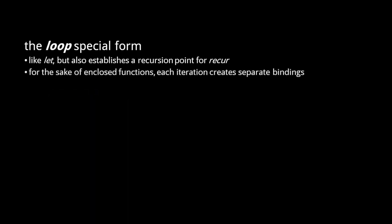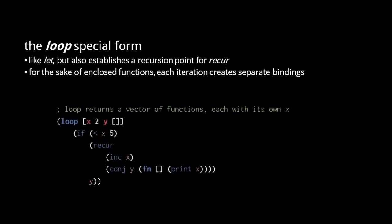Be clear that local symbol bindings in Clojure are always immutable, so you should think of each symbol binding of a loop as being created anew for each iteration. This subtle distinction matters when we create a function in a loop body. Each iteration of the loop creates a different function object, each seeing different bindings of the enclosing loop. You should think of each of these function objects as bound to its own immutable value of x, not a single x variable that changes.